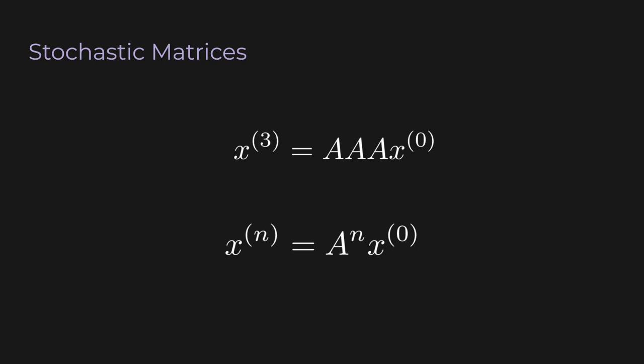Generalizing, if you want to know the state vector at time step n, you just multiply the initial state vector by the stochastic matrix n times. Think about this. This is incredible. You don't need to look for all the different paths or worry about missing a path. You just multiply matrices. You don't need to think at all. That's amazing.